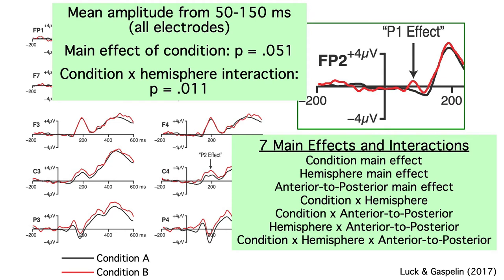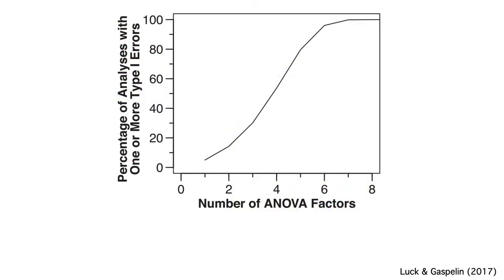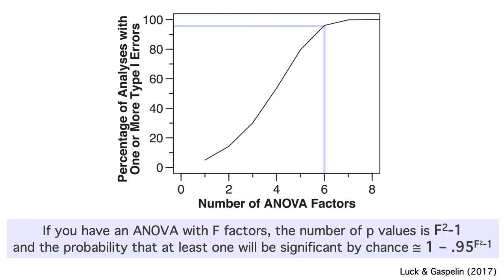If you have one p-value and the null hypothesis is true, you'll have a 5% chance of a significant effect. But if you have seven p-values and the null hypothesis is true for all seven, you have about a 30% chance that at least one will be significant — a 30% false positive rate instead of the expected 5%. With a four-way ANOVA you have over a 50% chance of a bogus significant effect, and with a six-way ANOVA the odds go up to over 95%. The math is included here as a close approximation.